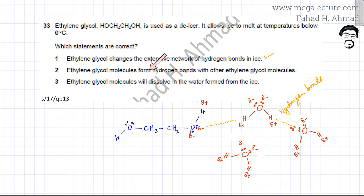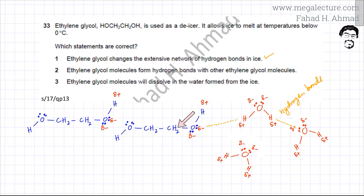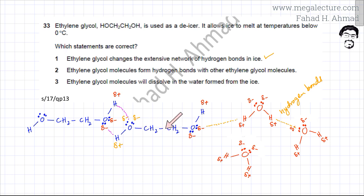The second statement is that ethylene glycol molecules form hydrogen bonds with other ethylene glycol molecules. Drawing another ethylene glycol molecule: both molecules have OH groups on each side, so the hydrogen has a partial positive charge and the lone pairs on oxygen have a partial negative charge. There is a force of attraction between the two molecules — the negative lone pairs on one molecule are attracted to the positive hydrogen of the other, and vice versa. So two ethylene glycol molecules, because they both have OH groups, can form hydrogen bonds with each other. This second statement is also correct.